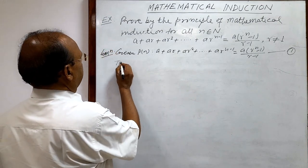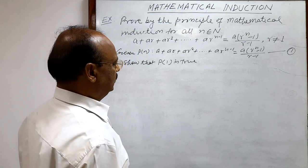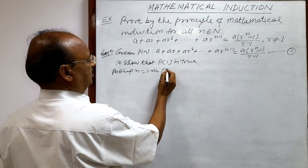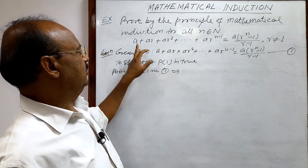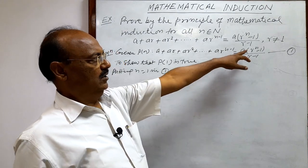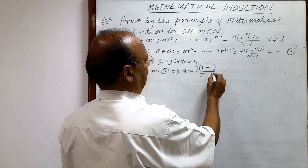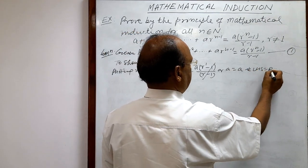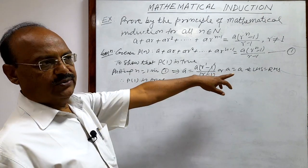Step 1: We have to show that P(1) is true. Putting n = 1 in relation number 1: since there are n total terms and n = 1, we take only the first term, which is a. The right-hand side becomes a·r^(1-1)/(r-1) = a·r⁰/(r-1) = a·1/(r-1)... the (r-1) terms cancel, giving a = a, so LHS = RHS. Therefore P(1) is true.